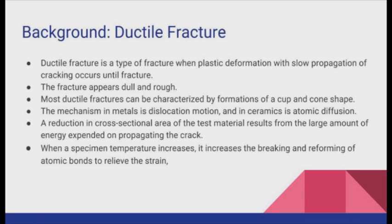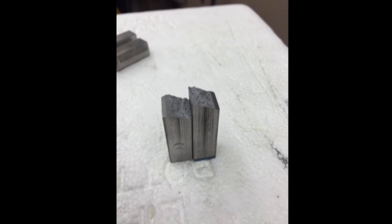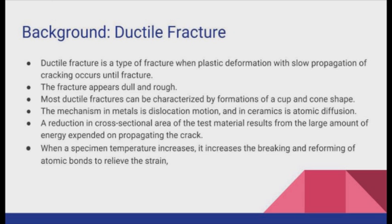Ductile fracture is a type of fracture when plastic deformation with slow propagation of cracking occurs until fracture. The fracture appears dull and rough, and most ductile fractures can be characterized by formations of a cup and cone shape. The mechanism in metals is dislocation motion and in ceramics is atomic diffusion. A reduction in cross-section area of the test materials results from the large amount of energy expended on propagating the crack. When a specimen's temperature increases, it increases the breaking and reforming of atomic bonds to relieve the strain.